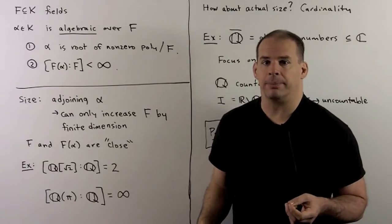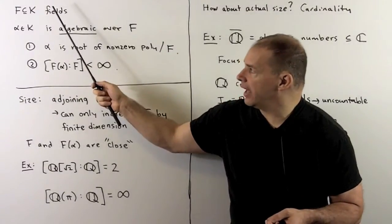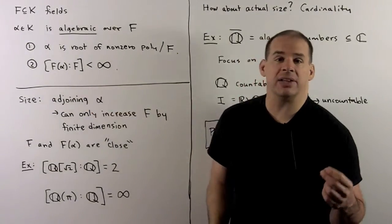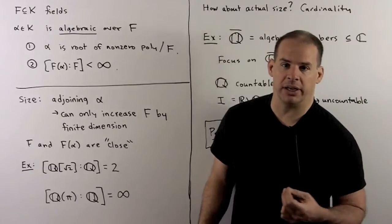Let's recall our main result from last time. We have f the subfield of k. We'll say that alpha in k is algebraic over f if one of the following two equivalent conditions hold.